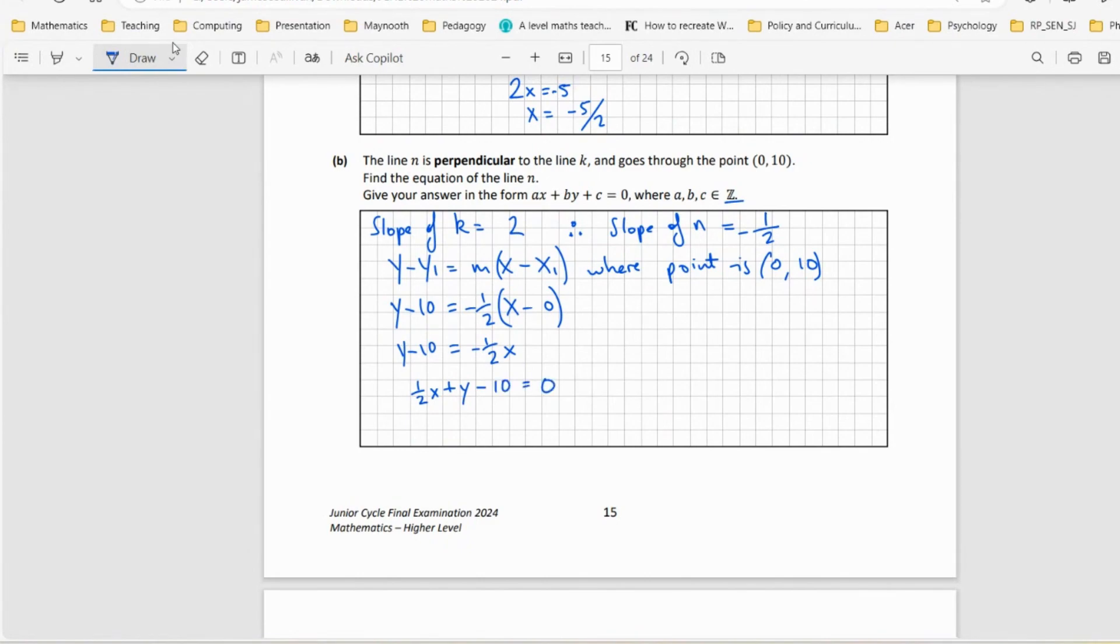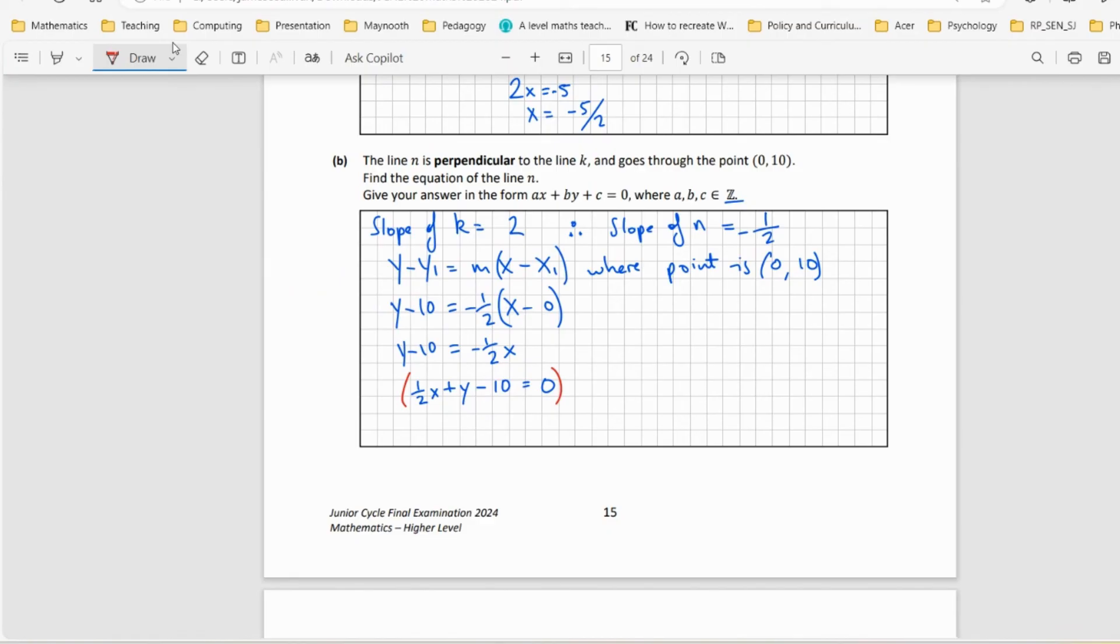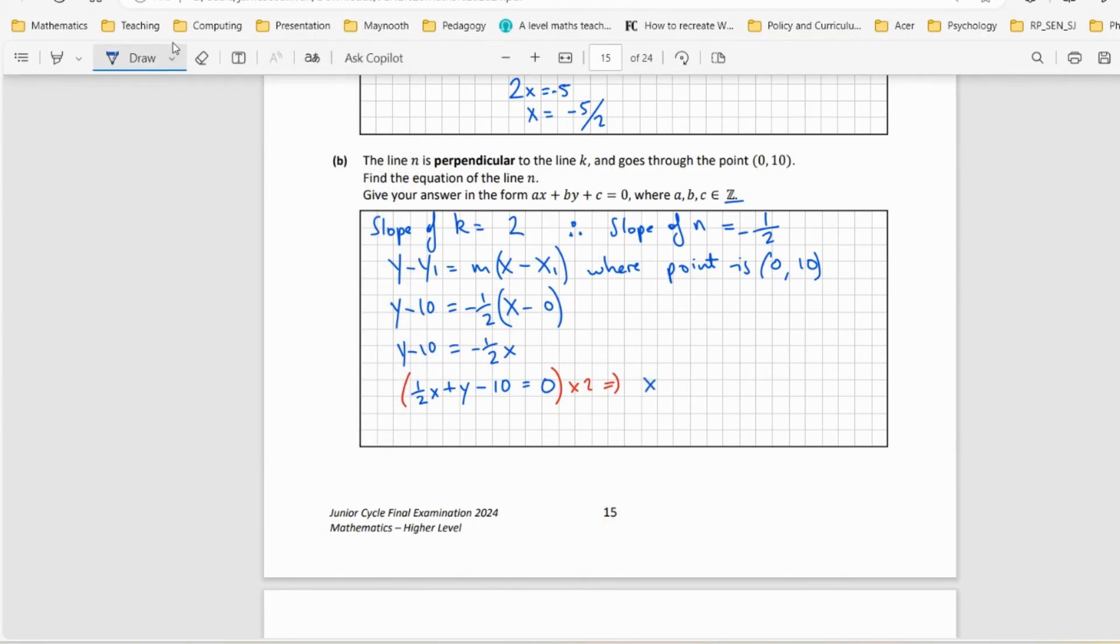Now I need to double everything to get rid of the fraction, so let's multiply by 2 to give me x + 2y - 20 = 0. That's what they want, I think. So that's my answer.